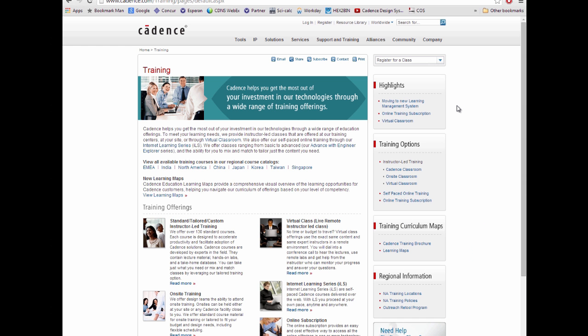I hope you found that video useful. If you want to find out about language training, if you go to this URL here cadence.com forward slash training, you'll see all the courses that are available in all the different regions, so you just click on these links for your region to see which courses there are and their availability. Courses can also be done via what's called internet learning series, which is basically an online course that you do yourself in your own time. Okay so thanks for listening and goodbye.